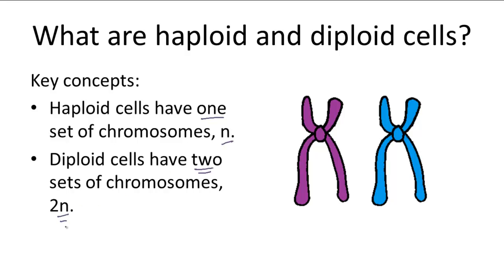So what does this exactly mean? What is a set of chromosomes? Remember we said that humans have 46 chromosomes, more commonly referred to as 23 pairs of chromosomes. This pair concept comes from the fact that all of humans' organs and tissues are made of diploid cells with two sets of chromosomes. Each set has 23 chromosomes, so together it makes 23 pairs of chromosomes.